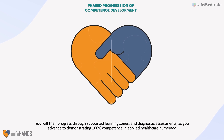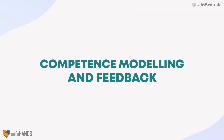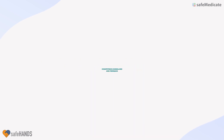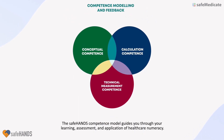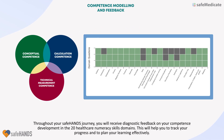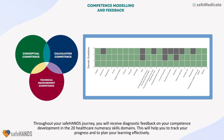Competence modeling and feedback. The Safe Hands competence model guides you through your learning, assessment, and application of healthcare numeracy. Throughout your Safe Hands journey, you will receive diagnostic feedback on your competence development in the 20 healthcare numeracy skills domains. This will help you to track your progress and to plan your learning effectively.